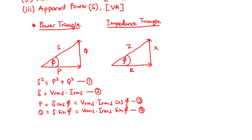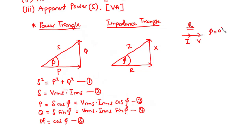The power factor is given by cosine of the angle phi. For a purely resistive circuit, the current is in phase with the voltage, meaning the phase angle between the current and the voltage is equal to 0. Therefore, the power factor, which is cosine of phi, equals cosine of 0, which equals 1. Such a circuit is said to have a unity power factor.